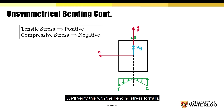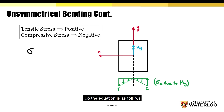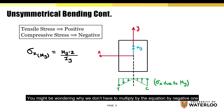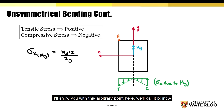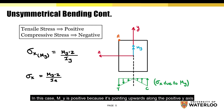We'll verify this with the bending stress formula. We'll denote the bending stress produced by My as sigma x for the My component. The equation is as follows: sigma x equals My multiplied by z divided by Iy. You might be wondering why we don't have to multiply the equation by negative 1. I'll show you with this arbitrary point — we'll call it point A. My is positive because it's pointing upwards along the positive y axis. The z value for A is also positive because it's in the positive region of the cross section.